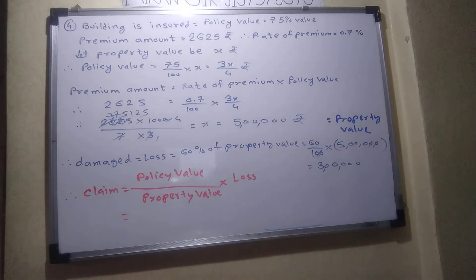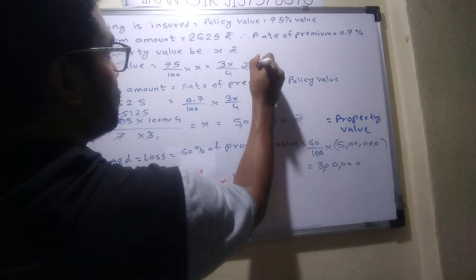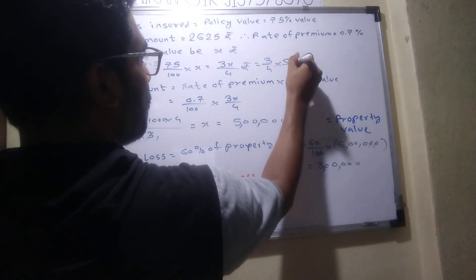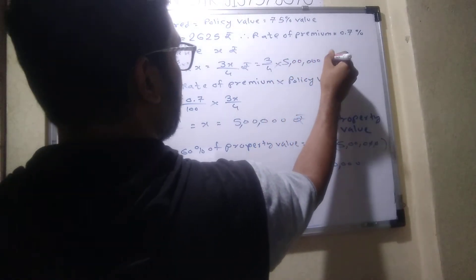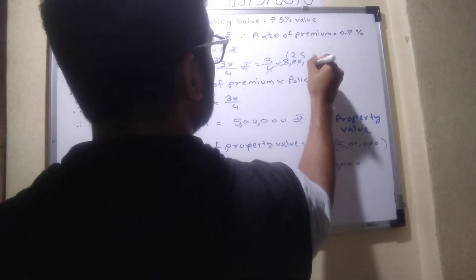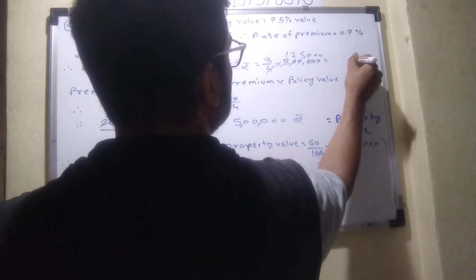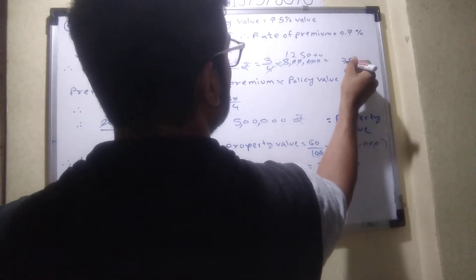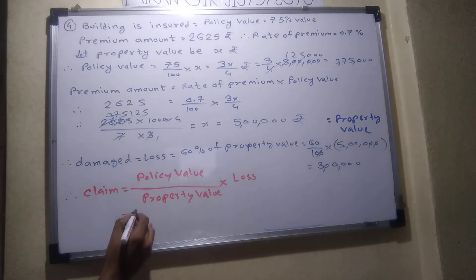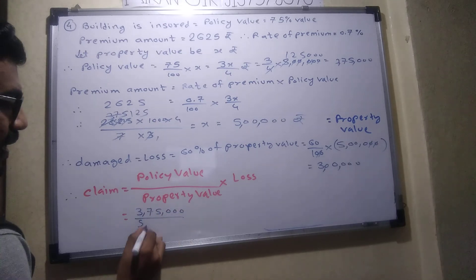So what is policy value, how much? Policy value is fine. Now 3 by 4 of 5,000,000. That's 3,750,000 upon 5,000,000.